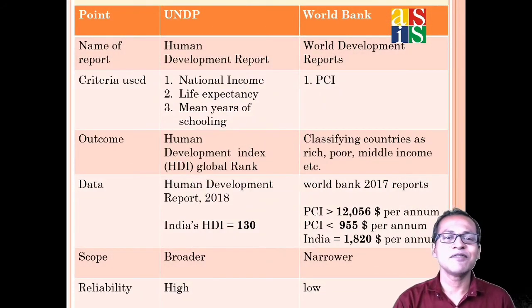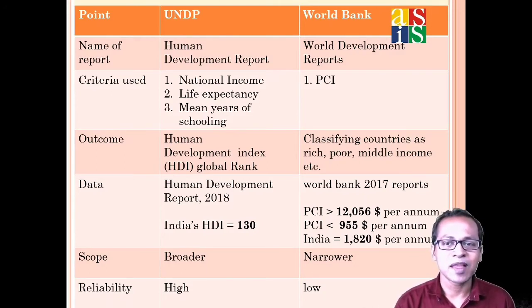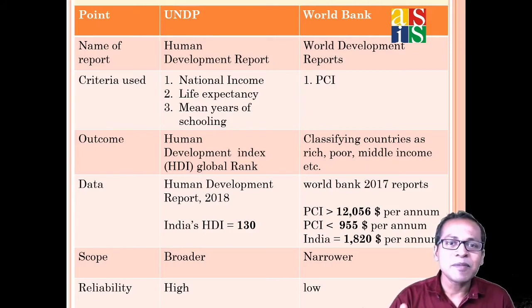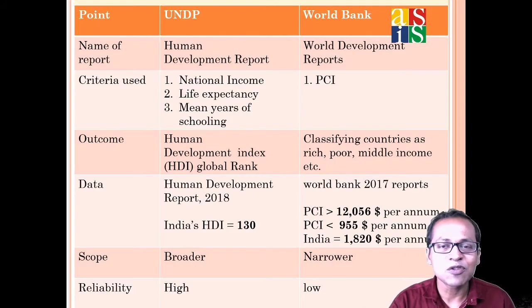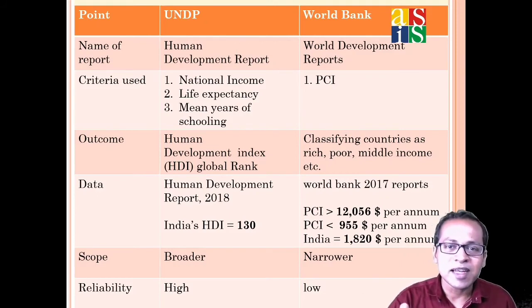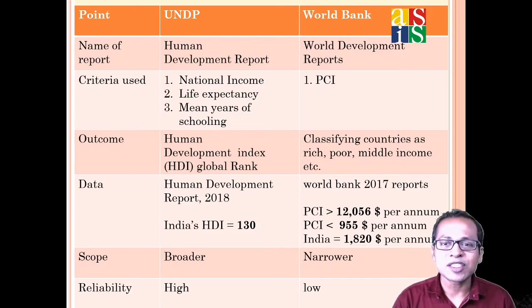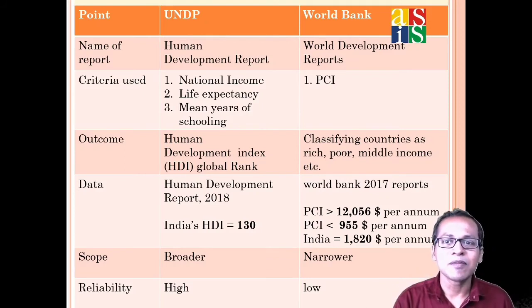Now let us compare the World Bank criteria with UNDP's HDI. The World Bank divides countries into three parts based only on per capita income: rich (above $12,056 per annum) and poor (below $955 per annum). Since the World Bank considers only per capita income to divide countries, it is not a very comprehensive measure for comparing development.